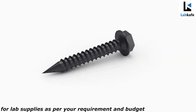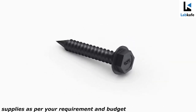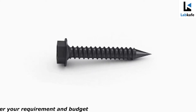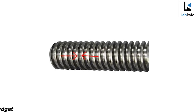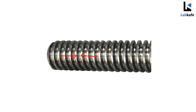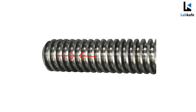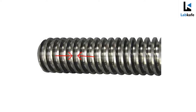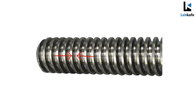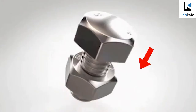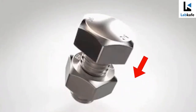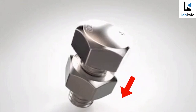In any ordinary screw there are threads. The separation between any two consecutive threads is always the same. The linear distance advanced by the screw along its axis when it makes one complete rotation is the separation distance between two consecutive threads. This distance is called pitch. It is usually 1 mm or 0.5 mm.